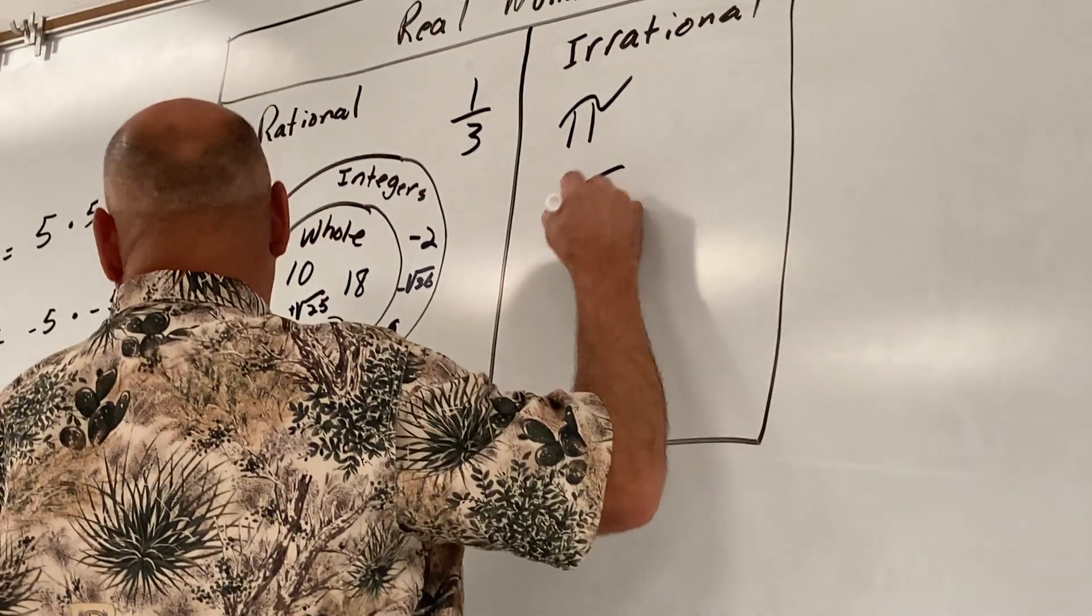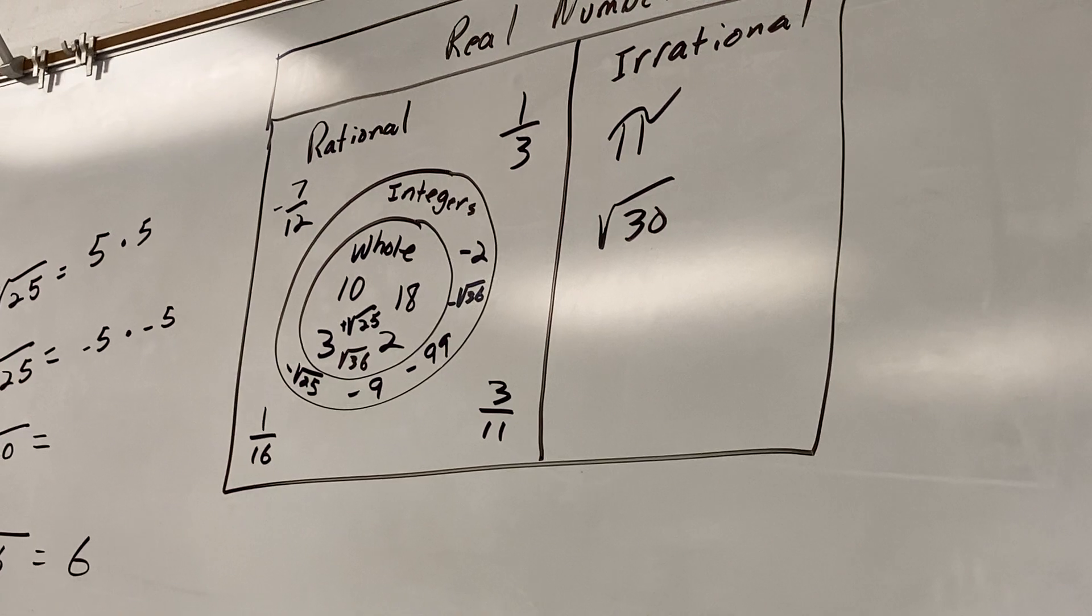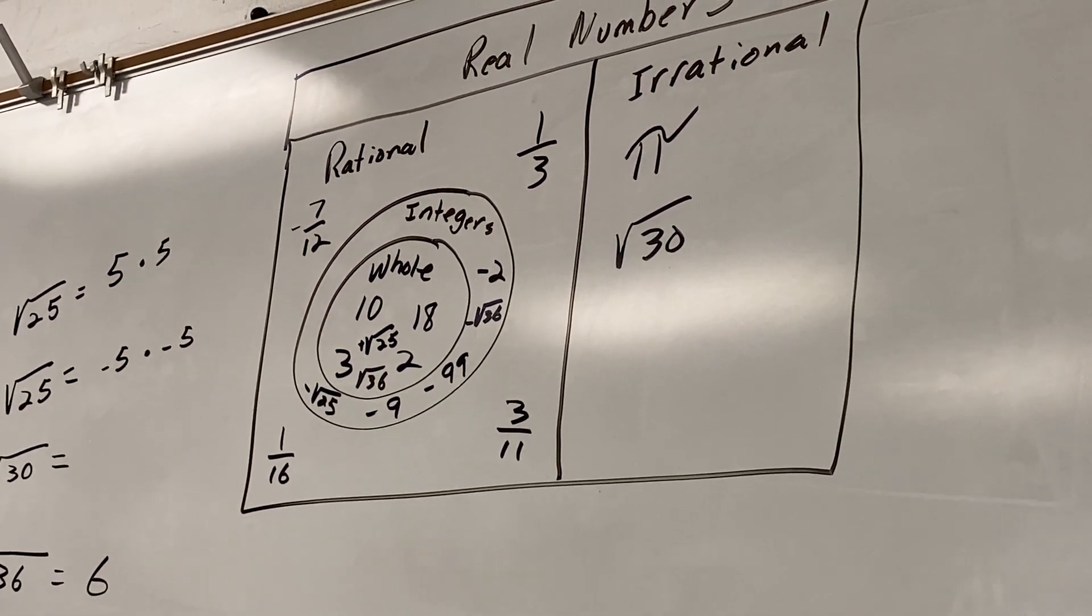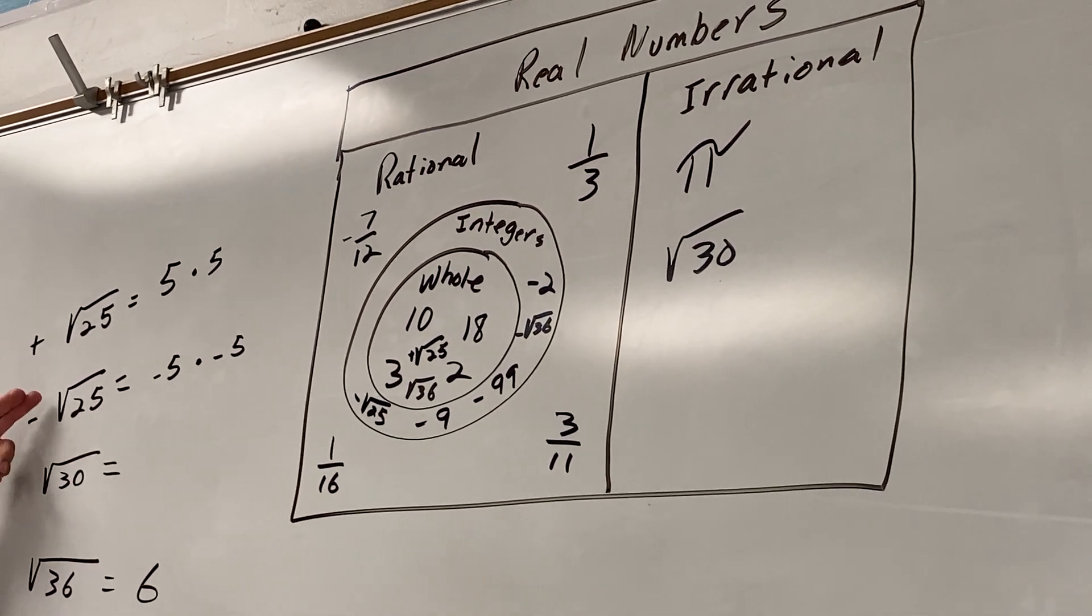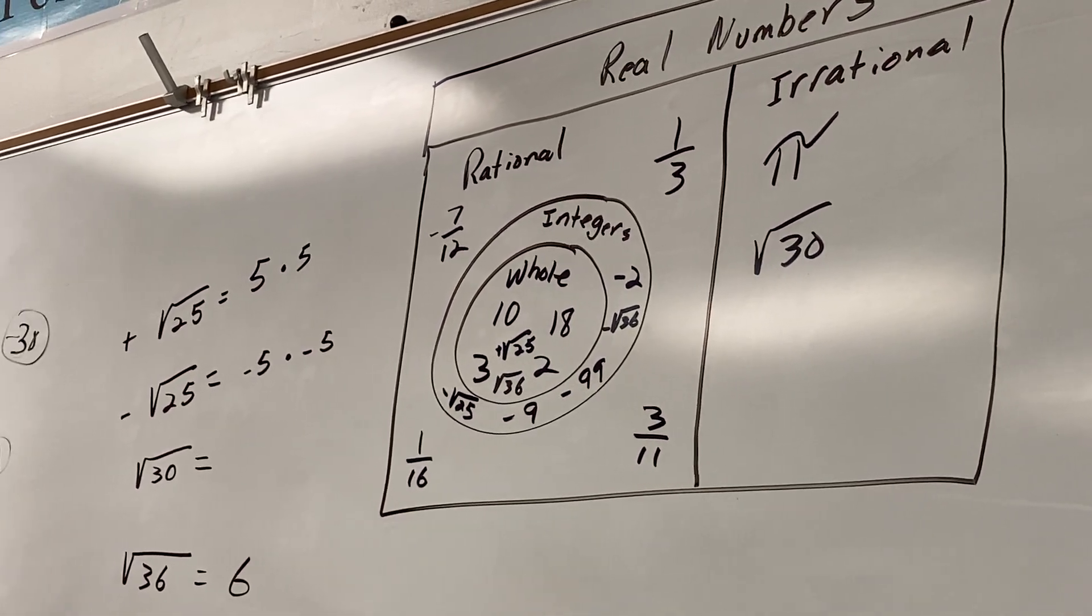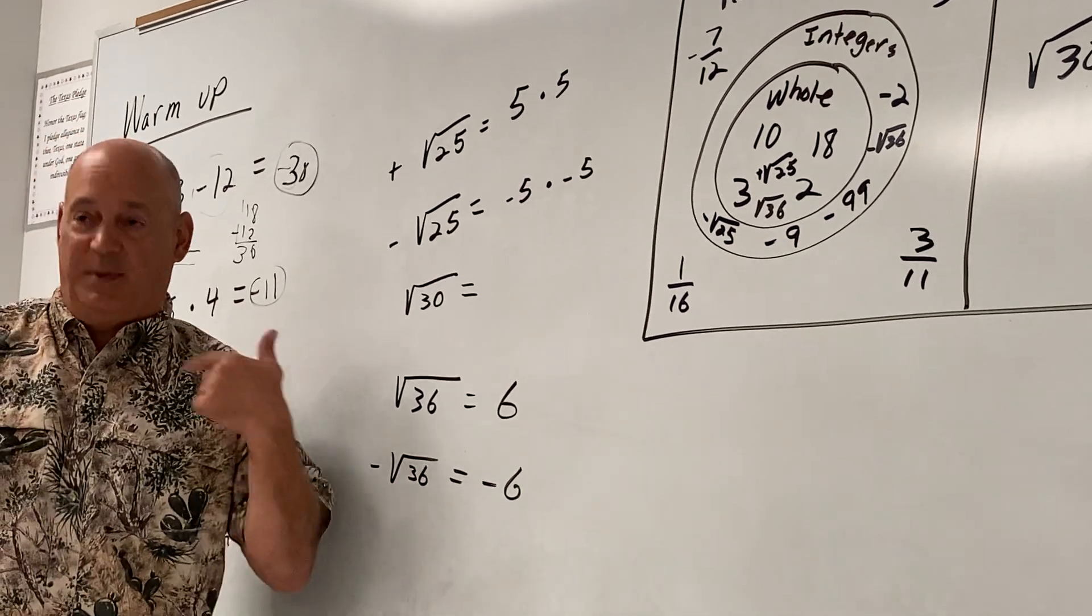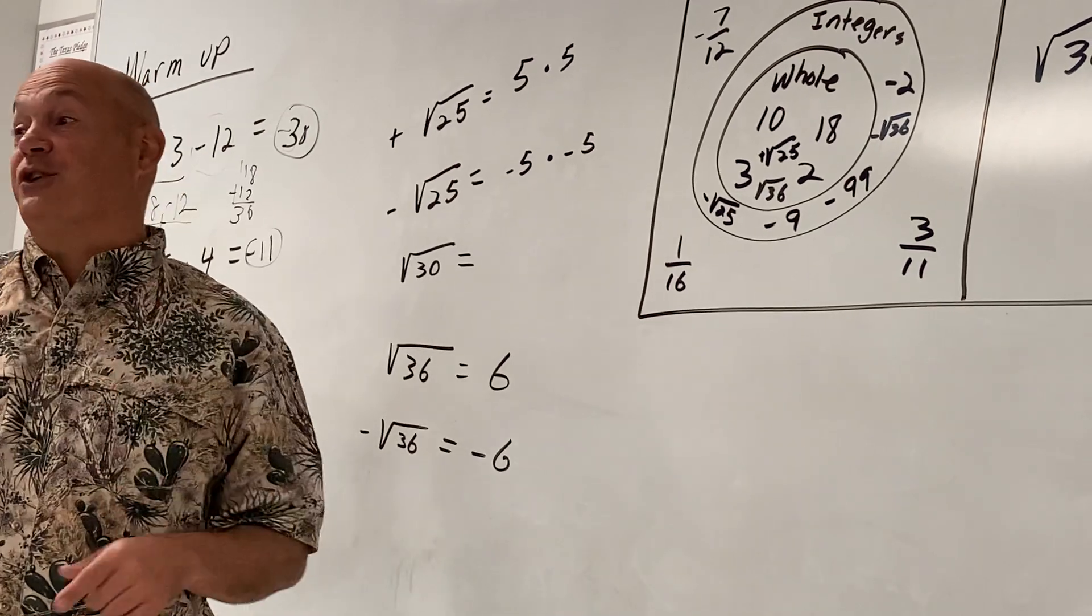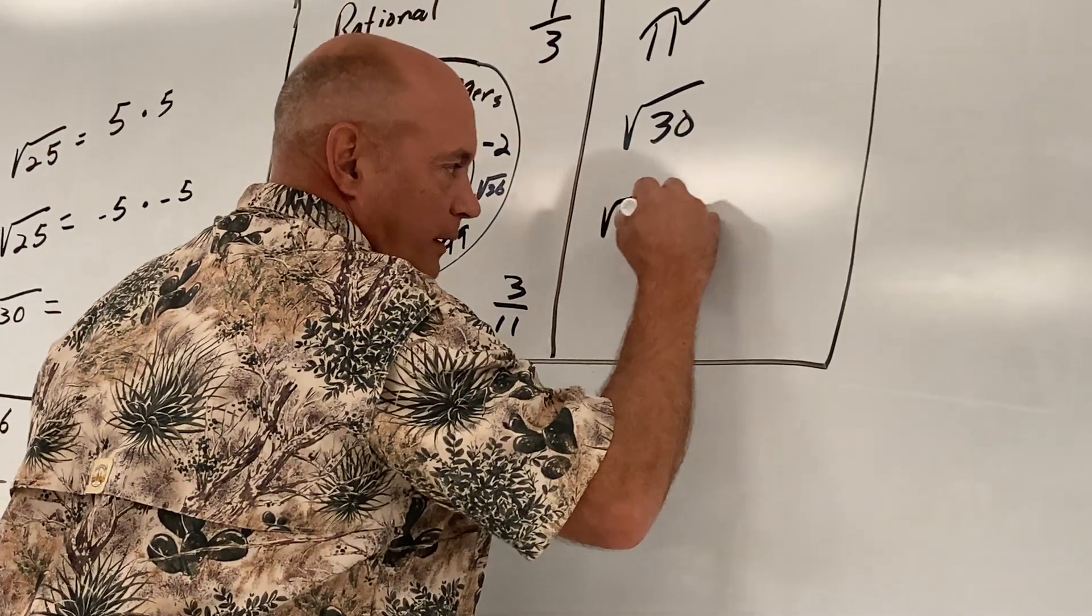So give me another irrational number. Joseph. We were just talking about any number between here and here would be irrational. So give me another one. I already picked 30. 27. Perfect. The square root of 27.